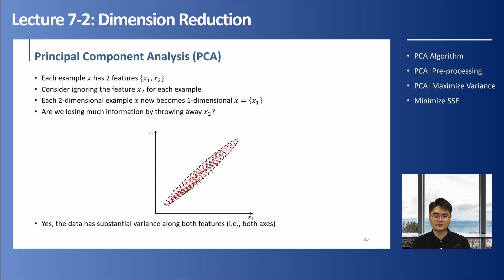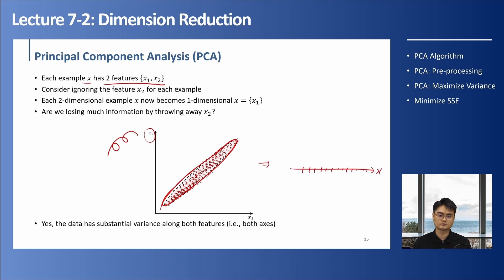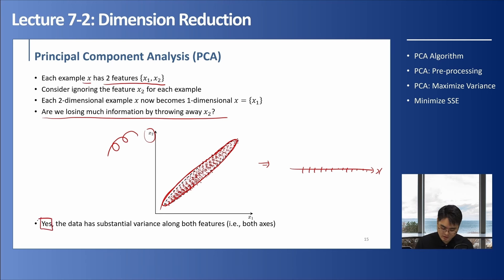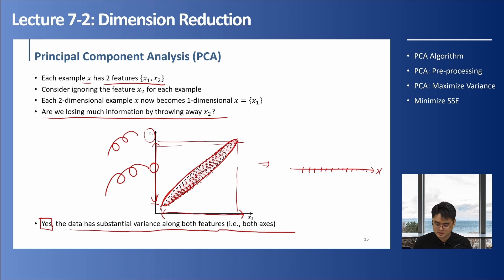Now let's look at a different example with the same two features, but now the distribution is an ellipsoid type. If we consider ignoring feature X2, this also becomes 1D data. Are we losing much information? Now the answer is yes, because the data has substantial variance along both features. The variance along X1 is significant and the variance along X2 is also significant. So when we discard the X2 information, we lose the entire information of that axis. We can't really reduce the dimension on this kind of data.